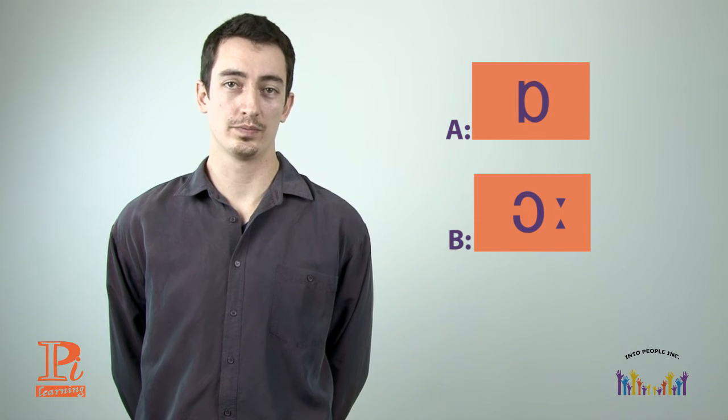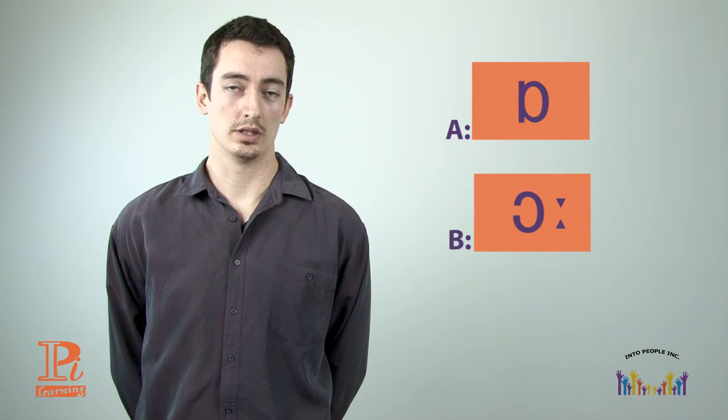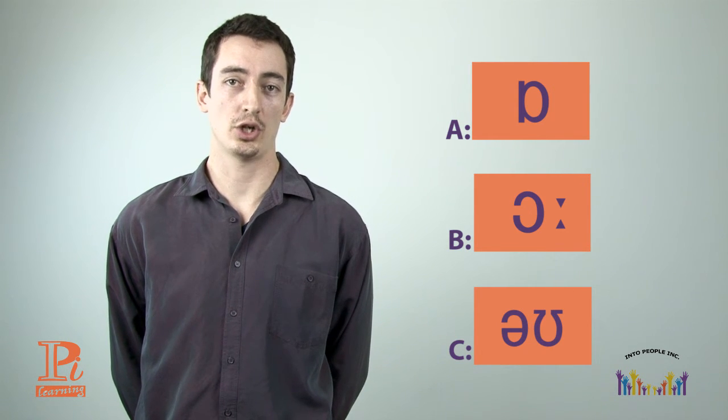In this quiz, I will test you on these three sounds and their IPA symbols. O, like in the word on. Or, like in the word door. And O, like in the word show. O, like in the word on. Or, like in the word door. And O, like in the word show.